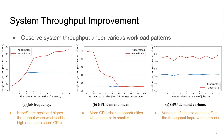First, we show system throughput improvement from KubeShare under various workload patterns. When job frequency increases, KubeShare can execute more jobs simultaneously, thus improving throughput. When job frequency is too low, there is no resource contention and GPU sharing has no impact. In the second plot, we adjust average usage demand — smaller jobs offer more GPU sharing opportunities, so KubeShare achieves more throughput improvement with smaller jobs. In the third plot, adjusting usage demand variance shows limited impact. Overall, using KubeShare always improves throughput, especially for heavy-loaded systems with small jobs.